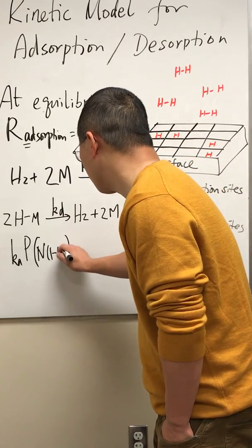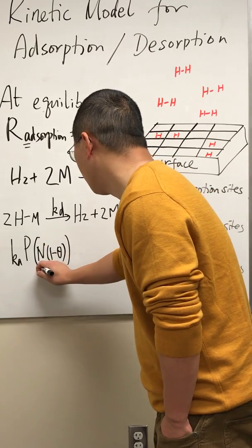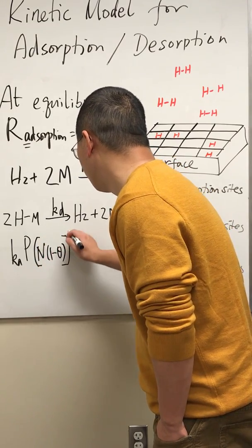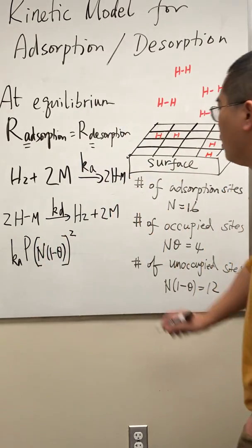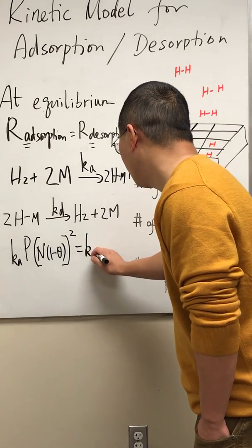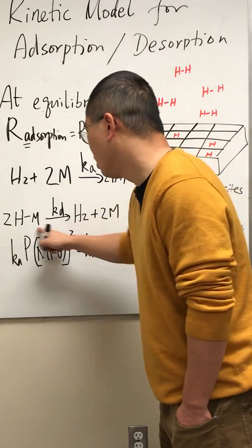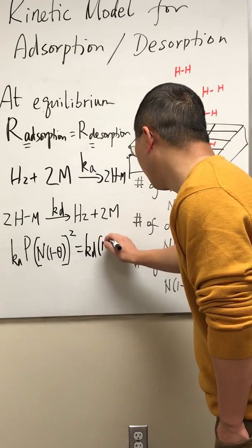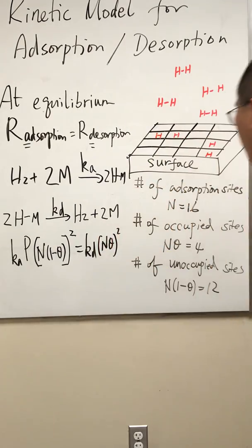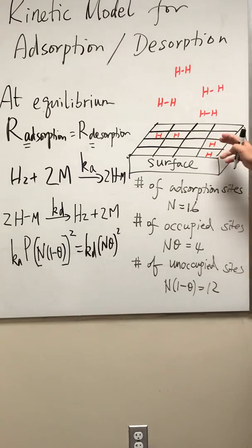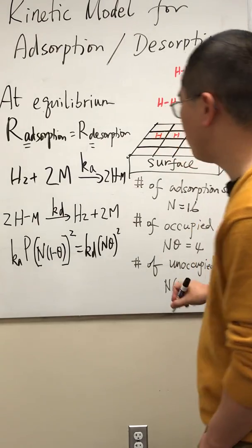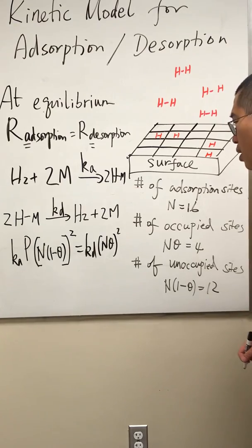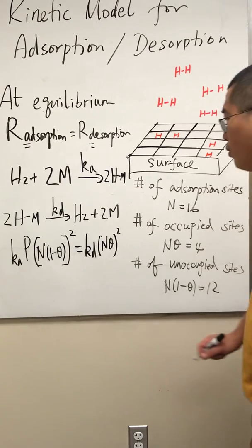And this whole thing squared. Okay, it's equal to kd times this guy squared, so it's N times theta squared. Again N times theta in this case it's four, one two three four. And then we just simply take the square root of both sides.